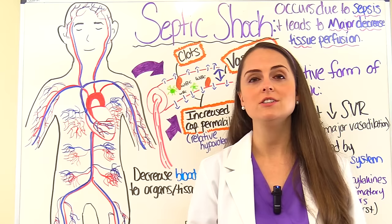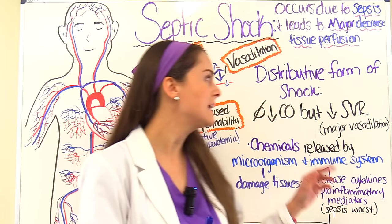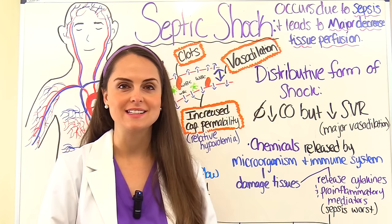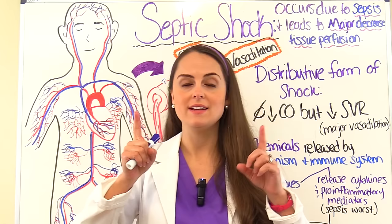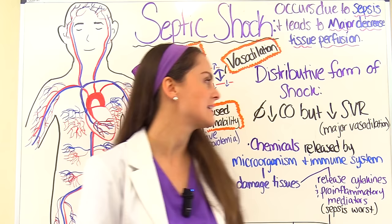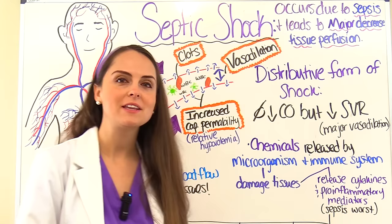The problem comes from a decrease in systemic vascular resistance, which is due to major vasodilation occurring throughout the body in these vessels. These vessels have widened, and whenever they widen it decreases systemic vascular resistance. So why in the world is that occurring?